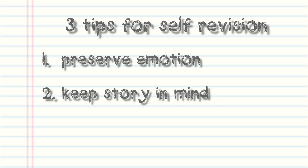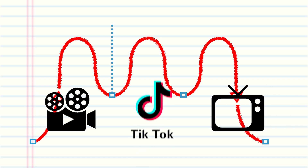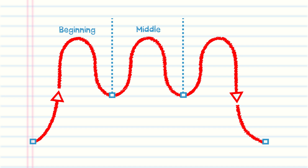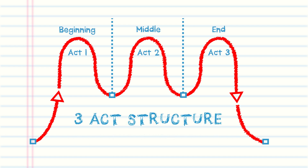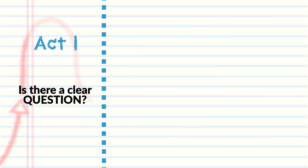Tip number two when self-revising is to keep your story in mind. You need to have a clear three-act structure. The three-act structure is a classic plot structure used by every single film, TV show, commercial, and even TikTok. Every single piece of content has a beginning, a middle, and an end — also known as act one, two, and three. You can verify that you have a clear beginning, middle, and end by using the three-act structure.